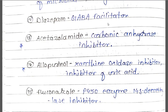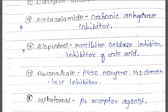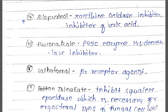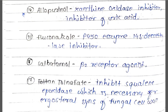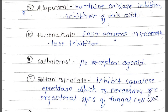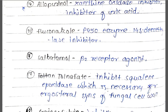Fluconazole inhibits the P450 enzyme 14-alpha demethylase. Salbutamol is a beta-2 receptor agonist. Tolnaftate inhibits squalene epoxidase, which is necessary for ergosterol synthesis in the fungal cell wall.